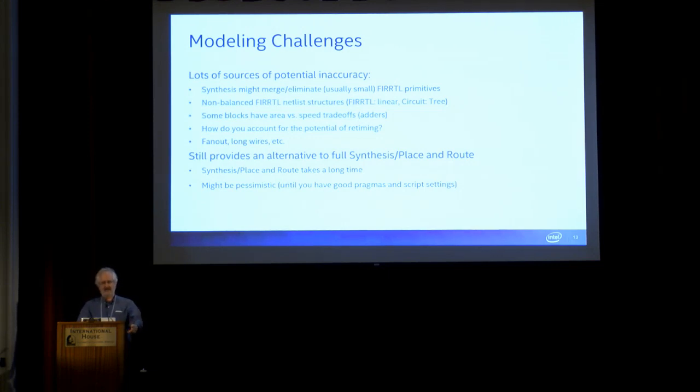One of them is the synthesis flow can do a lot of stuff after it gets the FIRRTL to make it simpler. Another thing is the FIRRTL itself may have some structural problems in it. There could be things that in the circuit are going to end up being implemented as a tree, but FIRRTL sees them as this chain of gates, so you might have to go through 10 things in series.